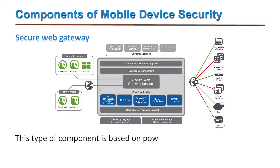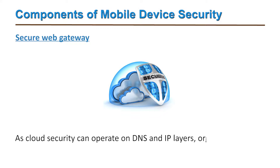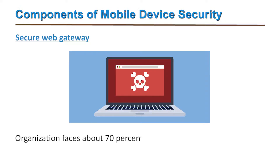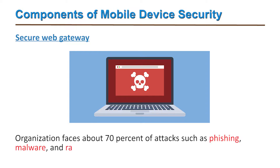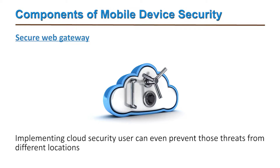The third component is the secure web gateway. This is based on powerful cloud security which can operate on domain name systems and various internet protocol layers, allowing organizations to identify attacks even before they are launched. Organizations face about 70 percent of attacks such as phishing, malware, and ransomware through these vectors.